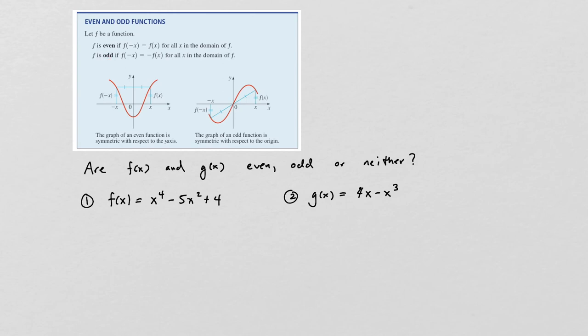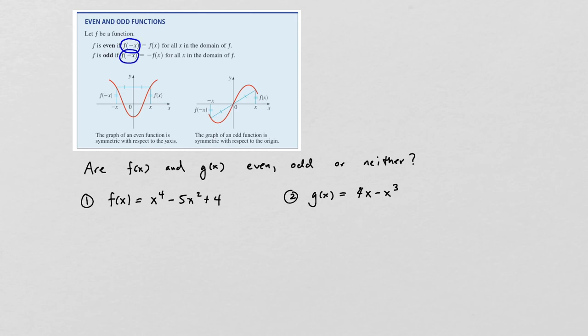We say a function is odd if f(-x) = -f(x). Whatever value you get for x, you are going to get the opposite of that value at -x. This gives you a symmetry that goes through the origin. To test for even or odd, in either case you need to consider what f(-x) is. The question here is: are the functions f(x) and g(x) even, odd, or neither?